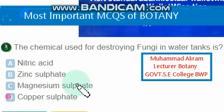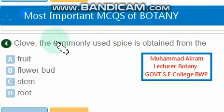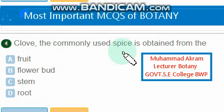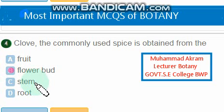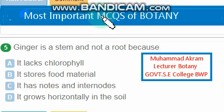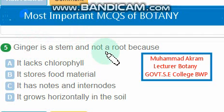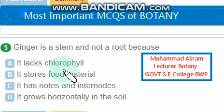Copper sulfate is the right option. From water tanks, we can destroy fungi by using copper sulfate. Clove, the commonly used spice, is obtained from the flower bud — yes, flower bud is the right option.